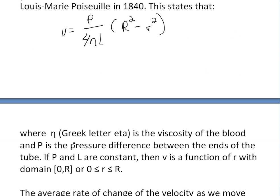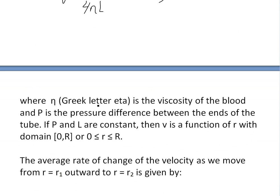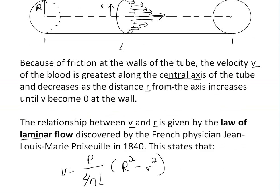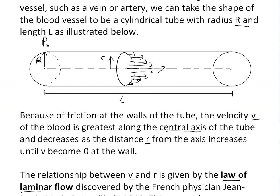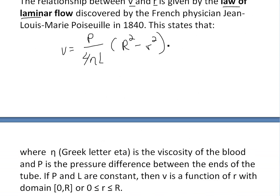Here, eta (Greek letter) is the viscosity of the blood, which means how thick or sticky it is. P is the pressure difference between the ends of the tube, so P equals delta P, which is P1 minus P2. The high pressure side flows toward the low pressure side.